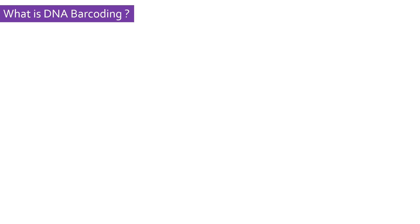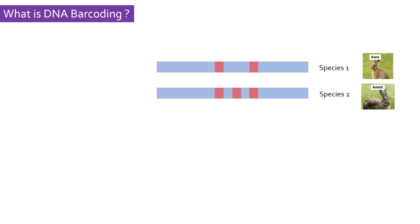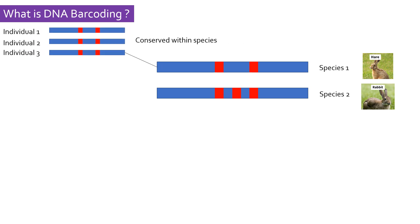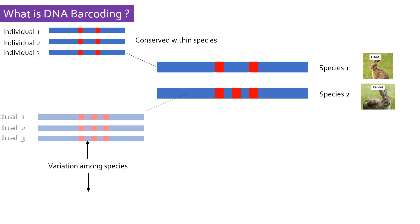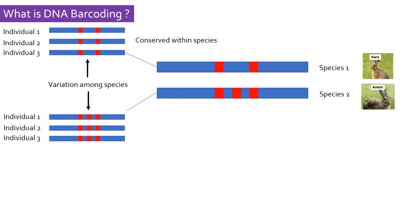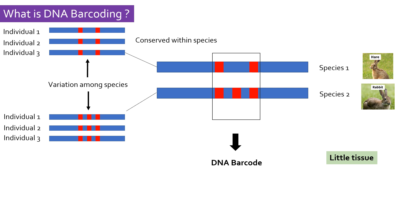DNA barcoding is a technique used to identify and classify different species based on variation in their DNA sequences. In this, one or more regions of DNA which are highly conserved among individuals within a species but show variation among different species are targeted for sequencing to generate a DNA barcode for that species. One advantage of DNA barcoding is that it can be done with a little amount of DNA extracted at any stage of the organism, and is sometimes even possible using dried samples.